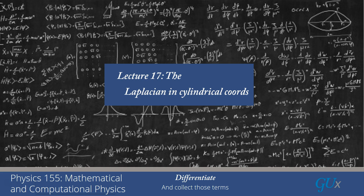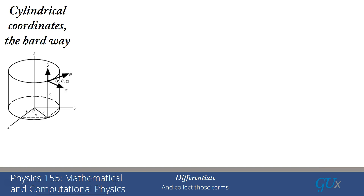Welcome to Lecture 17, Part 1: The Laplacian in Cylindrical Coordinates, titled 'Differentiate and Collect Those Terms.' Figuring out how to calculate the gradient, the divergence, and the Laplacian in both cylindrical and spherical coordinates is something that everyone needs to see at some point in their physics career. Depending upon exactly how you do it, it either is a long and tortuous path to the answer, or a somewhat shorter but perhaps devious-looking way of getting there. I'm going to show you both ways.